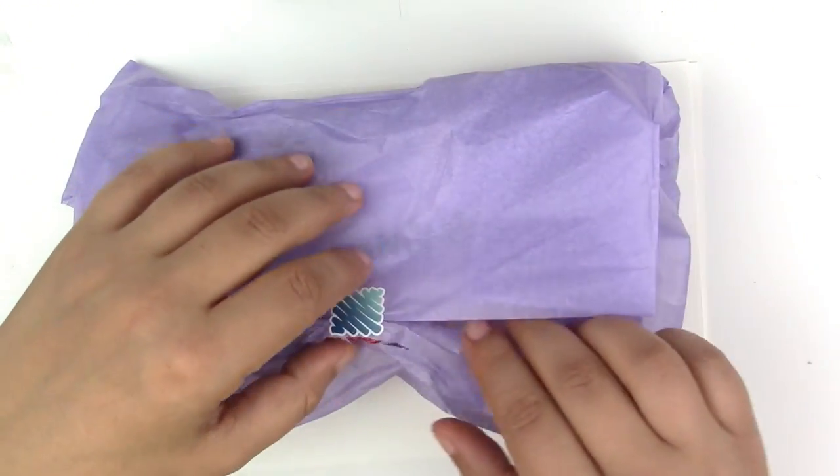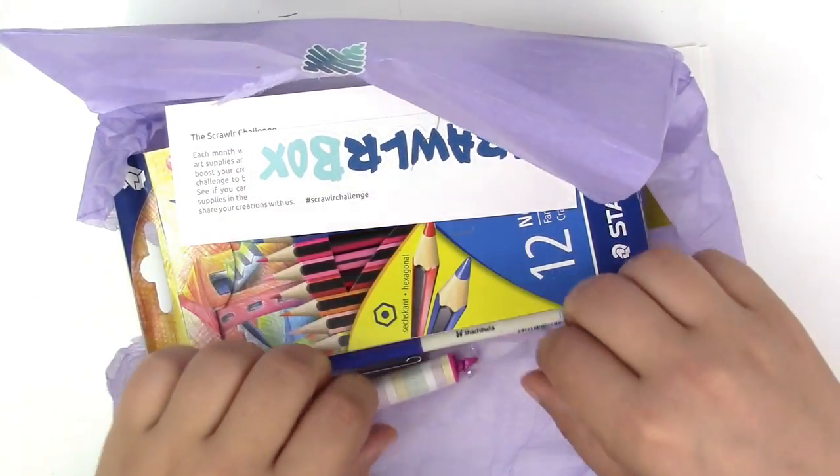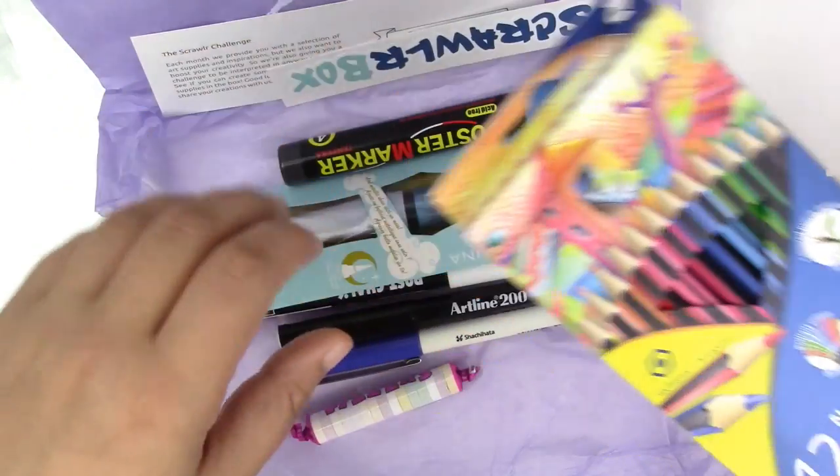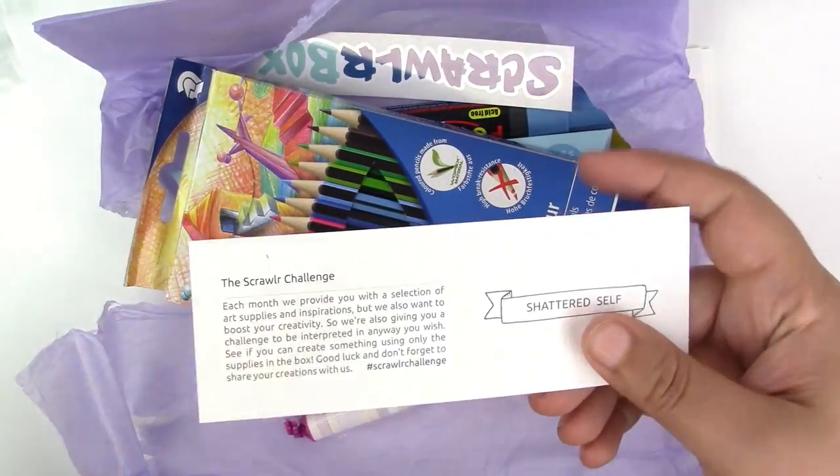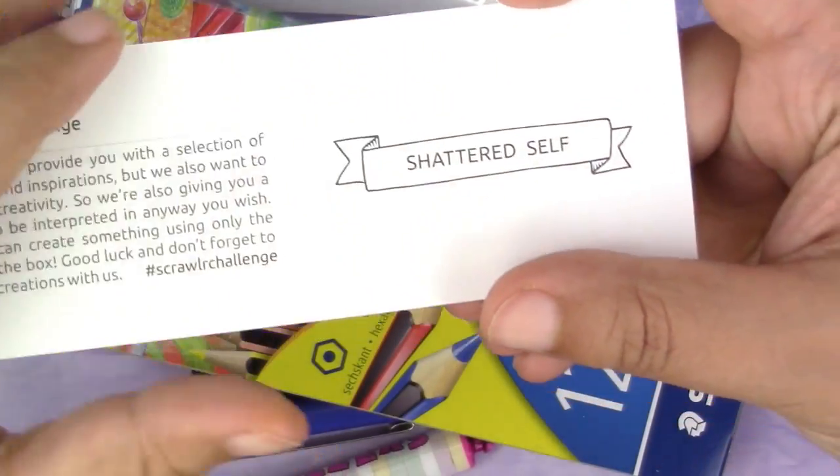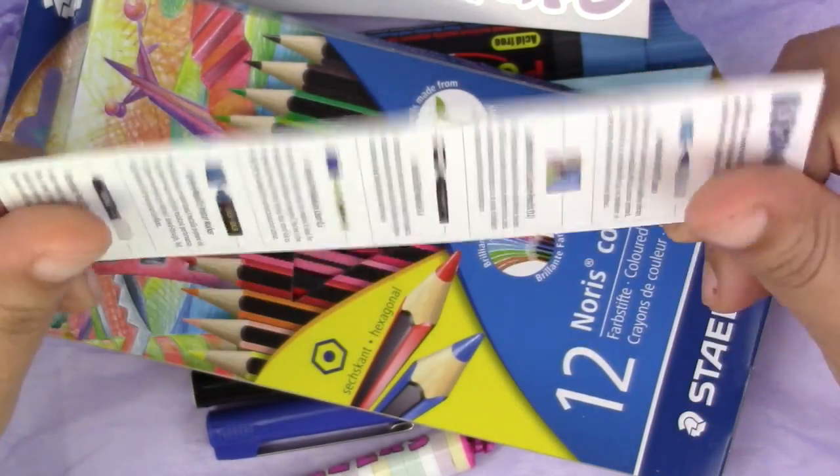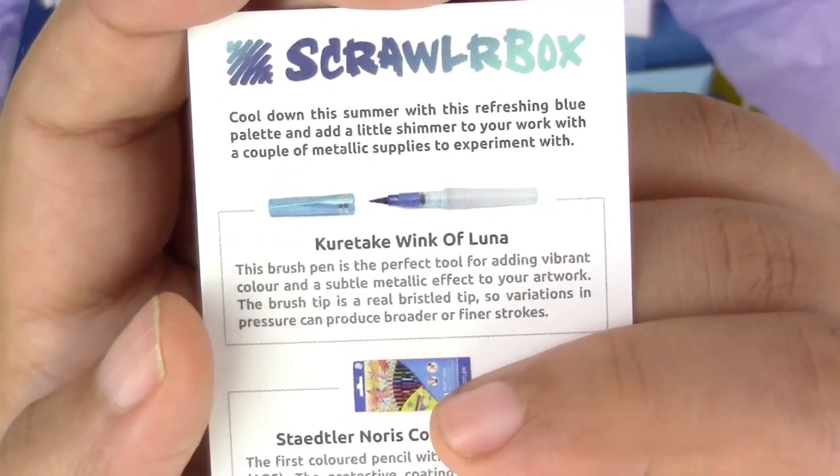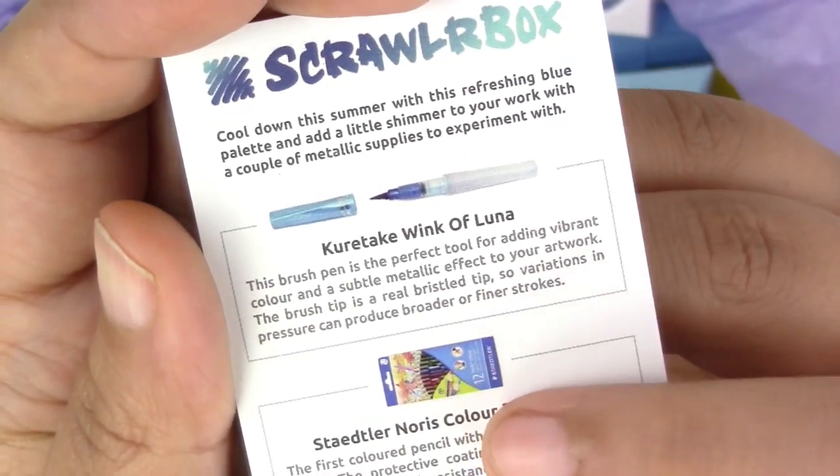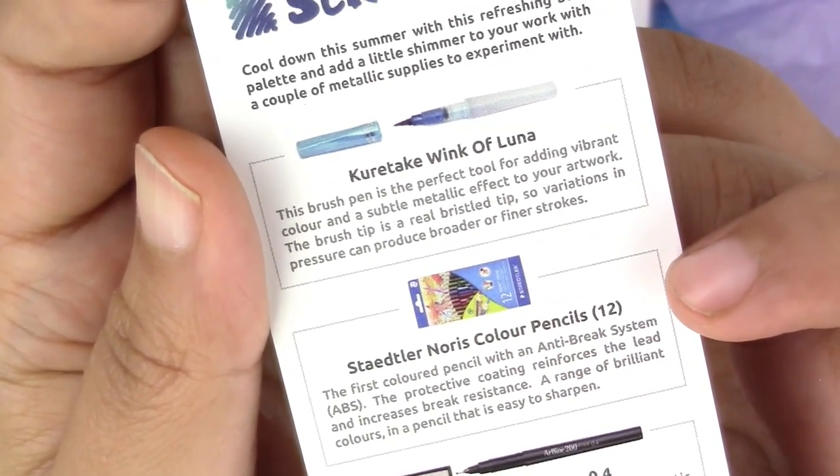Before we get into there's paper, I don't know what any of these materials are so we're gonna have to open this. Oh, it's colorful. What is that? I'm getting ahead of myself. Shattered Self, that is an interesting theme for the challenge. Here is our list of materials. We have a Kuretake Wink of Luna. It's a brush pen for adding vibrant color and subtle metal effect to the artwork.